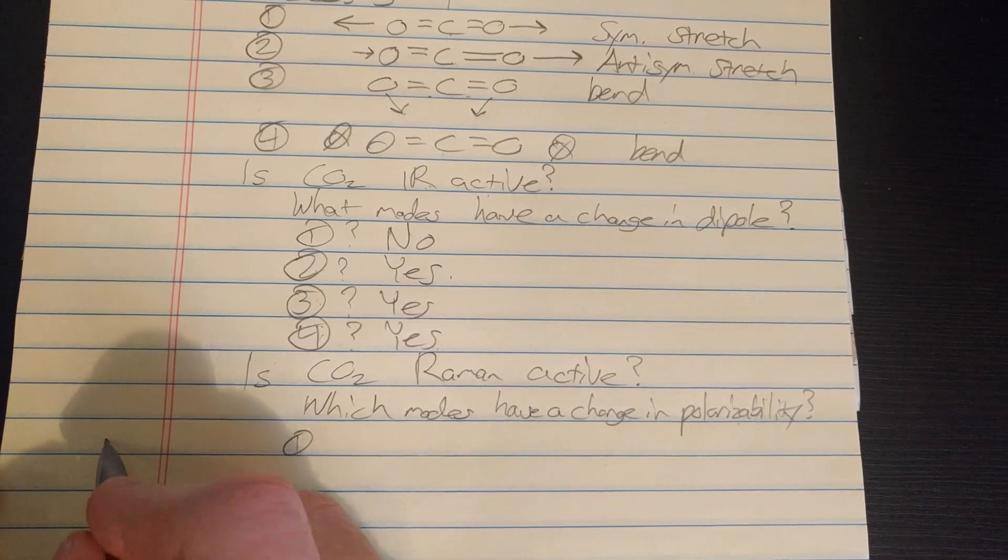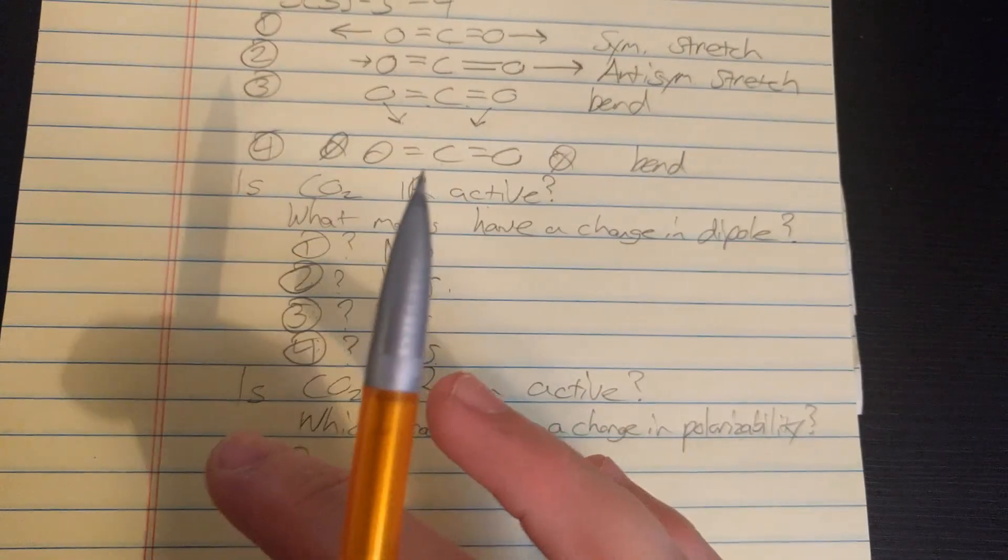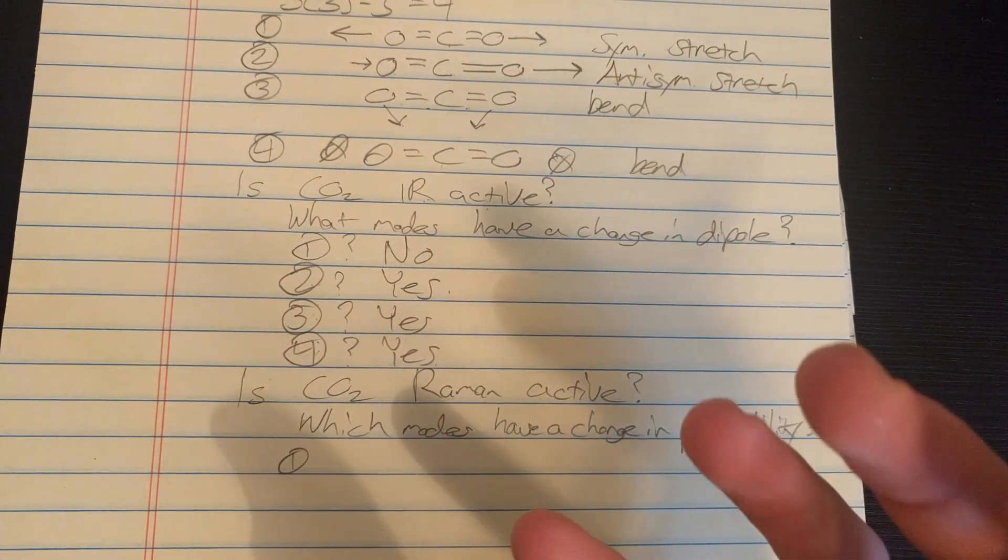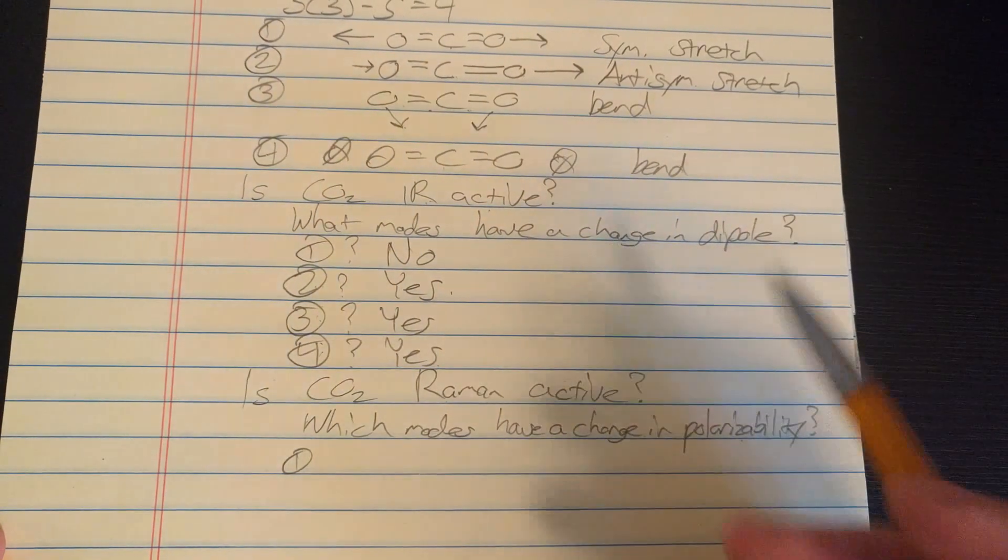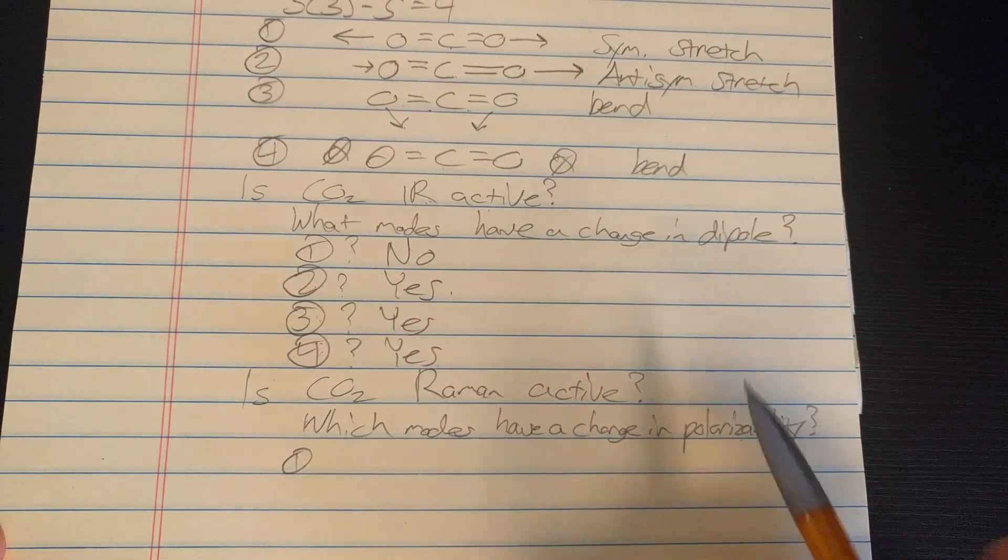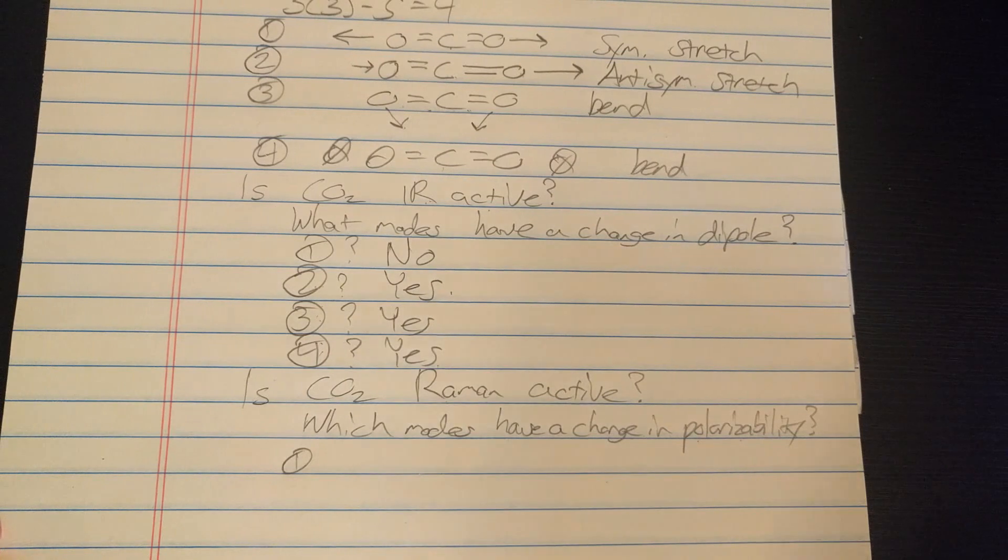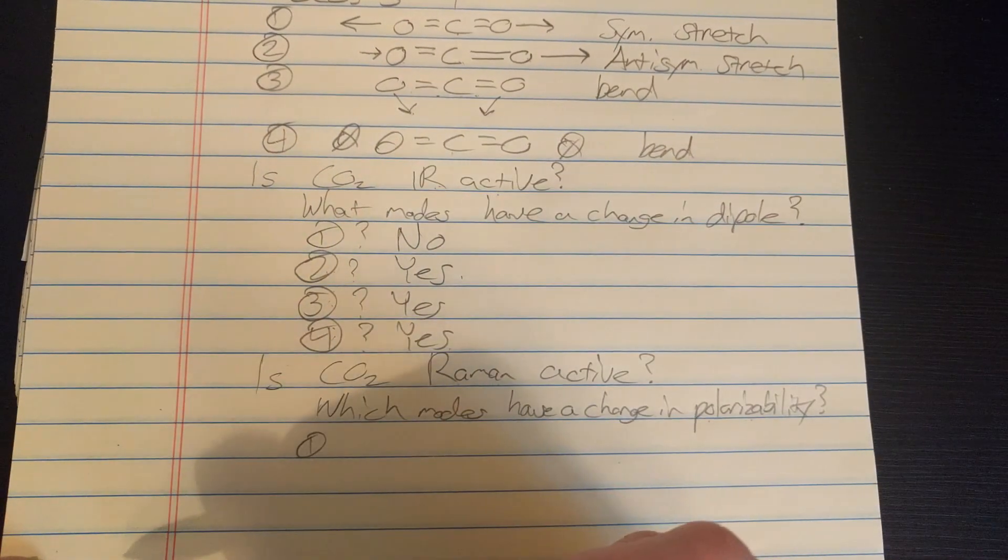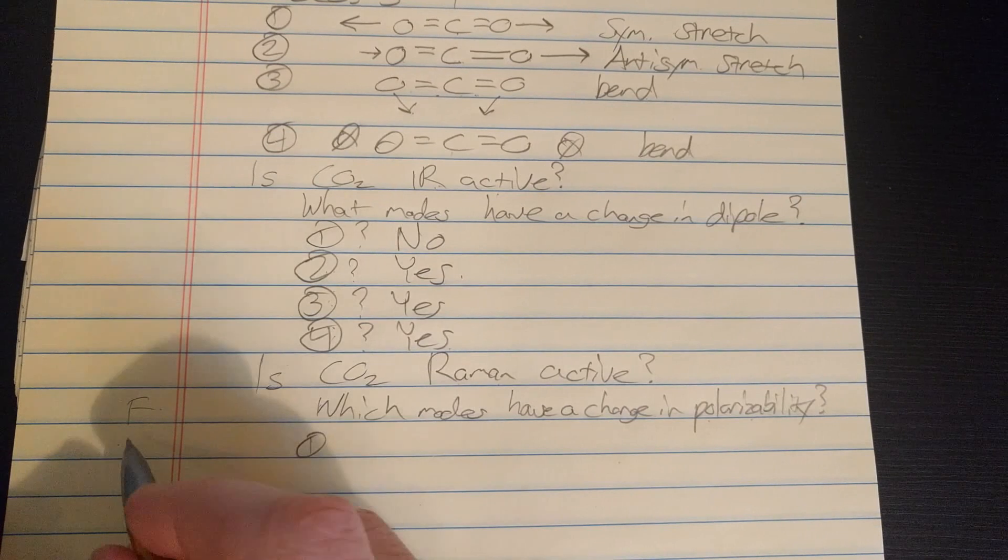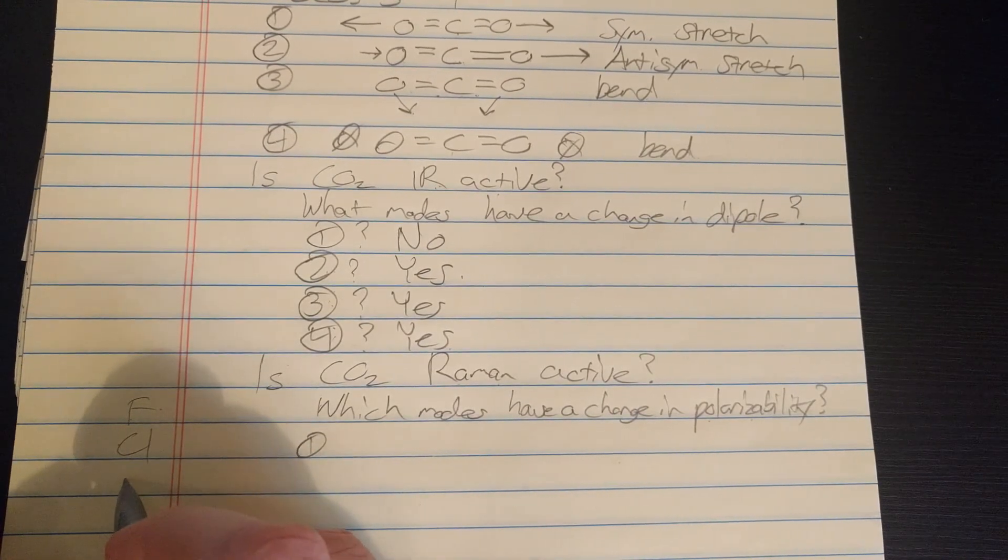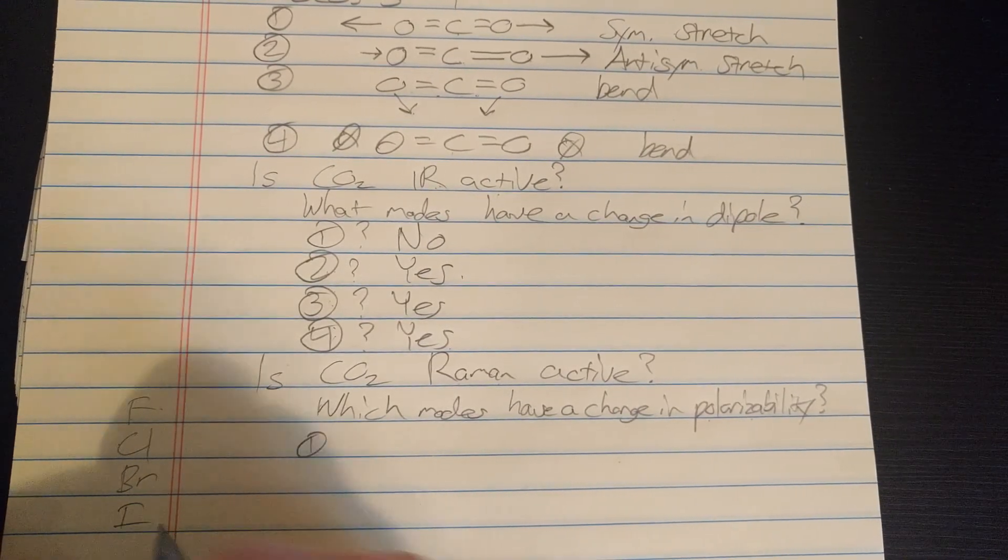So if you take fluorine, you know fluorine is a small molecule and its electrons are really close to it. It's hard to pull the electrons off fluorine so fluorine is not very polarizable. Whereas if you go down to iodine, so the halogen column: fluorine, chlorine, bromine, iodine.